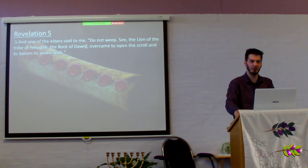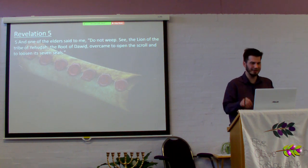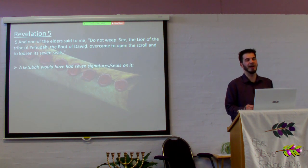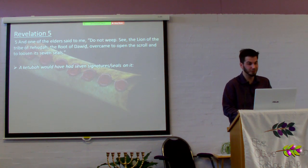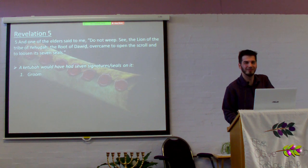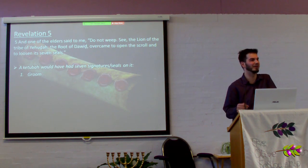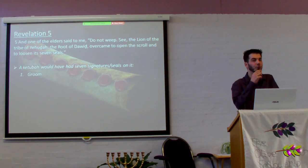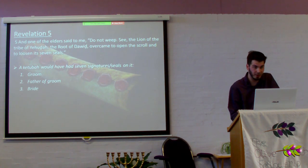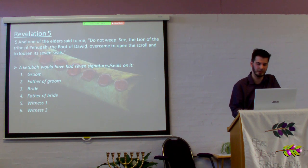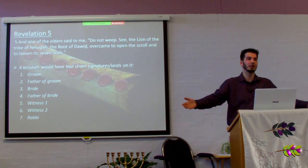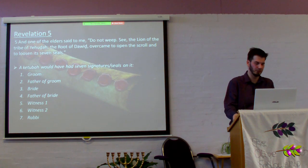One of the elders said to me: 'Do not weep. See the lion of the tribe of Yehudah, the root of David, overcame to open the scroll and to loosen its seven seals.' A Ketubah would have had seven signatures on it — back then a signature meant a wax seal pressed with a signet ring. The groom would have signed it, as would the father of the groom. The bride would sign it, as would her father. Then witness number one and witness number two. And finally the rabbi or judge who oversaw the whole ceremony. These are your seven seals — your seven signatures.